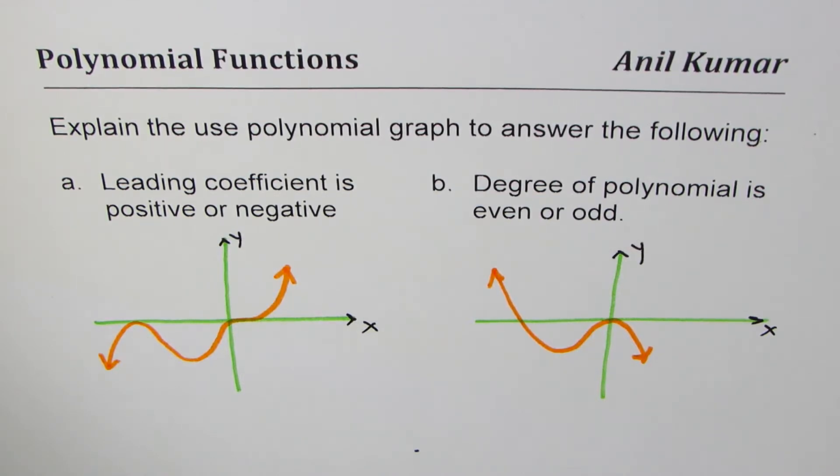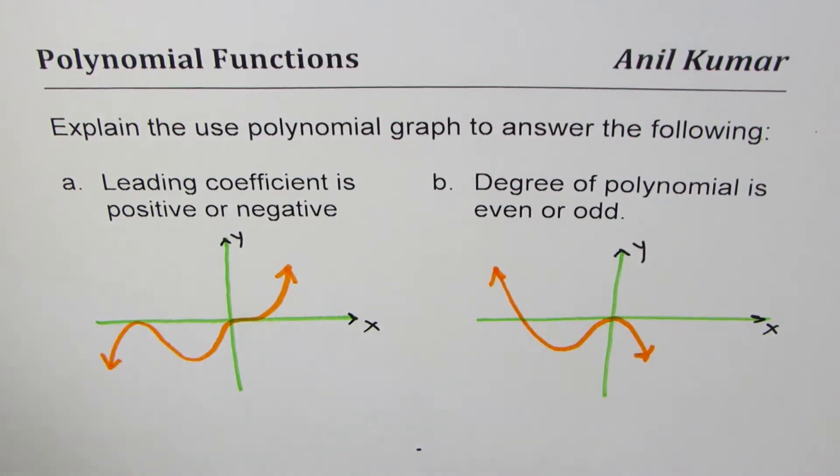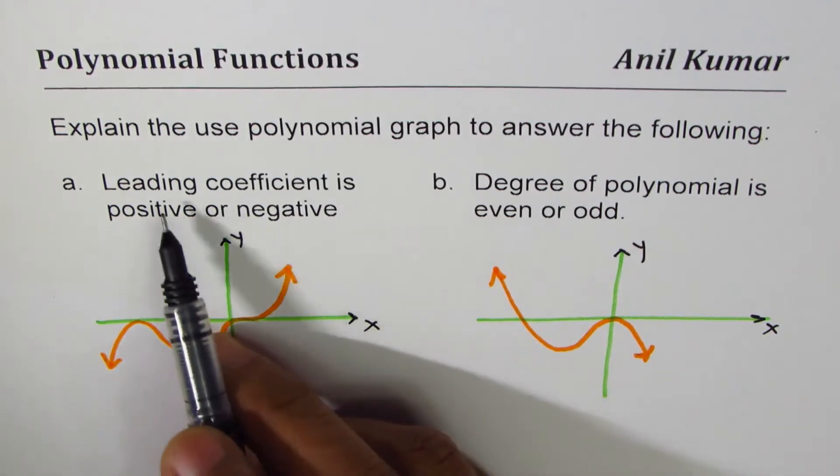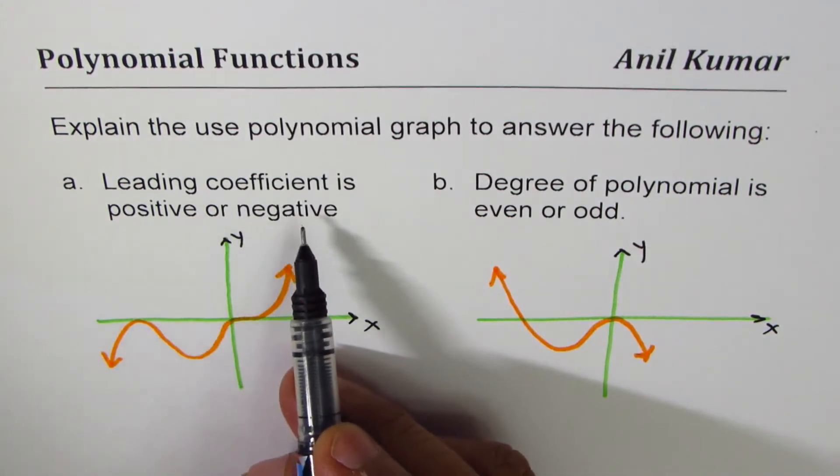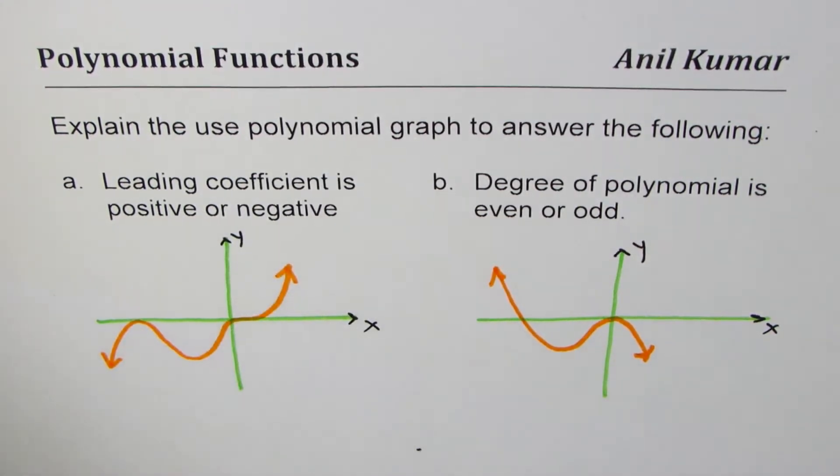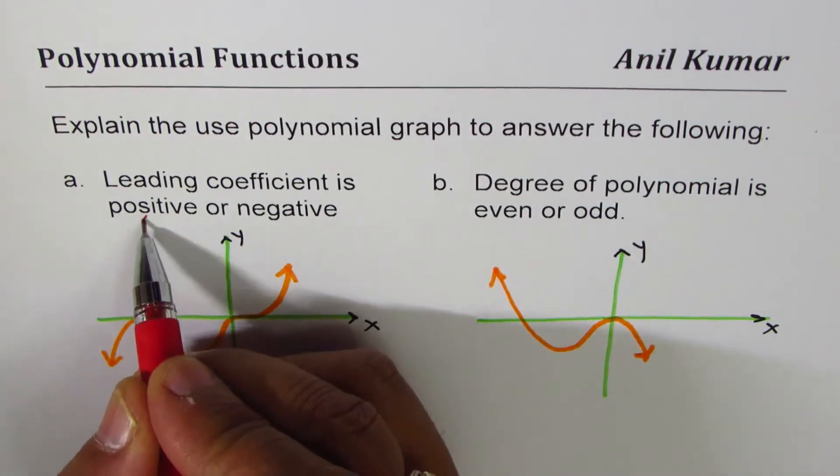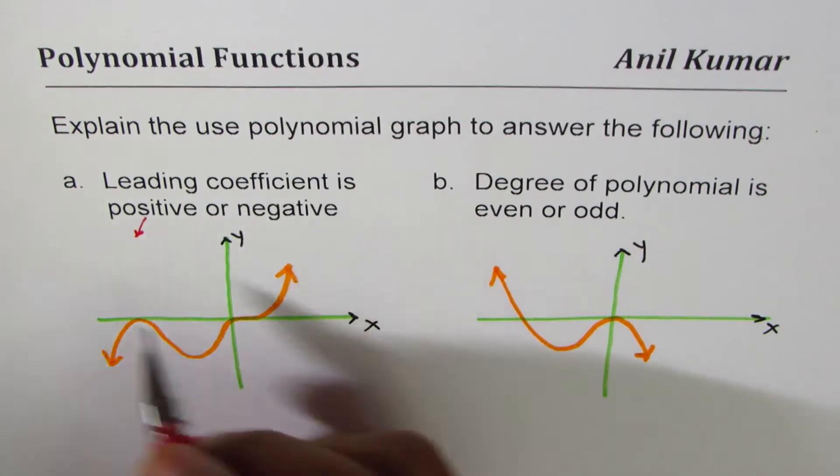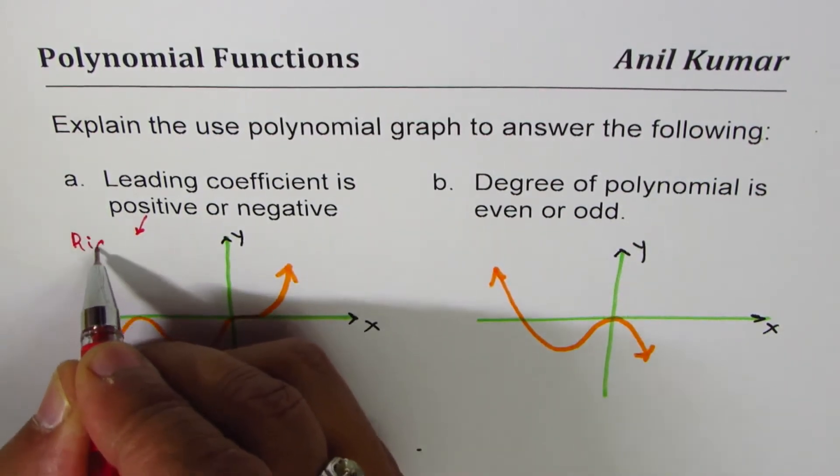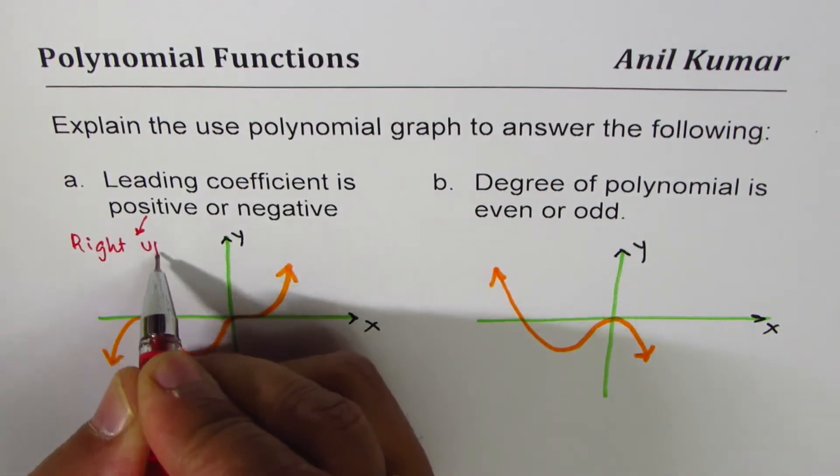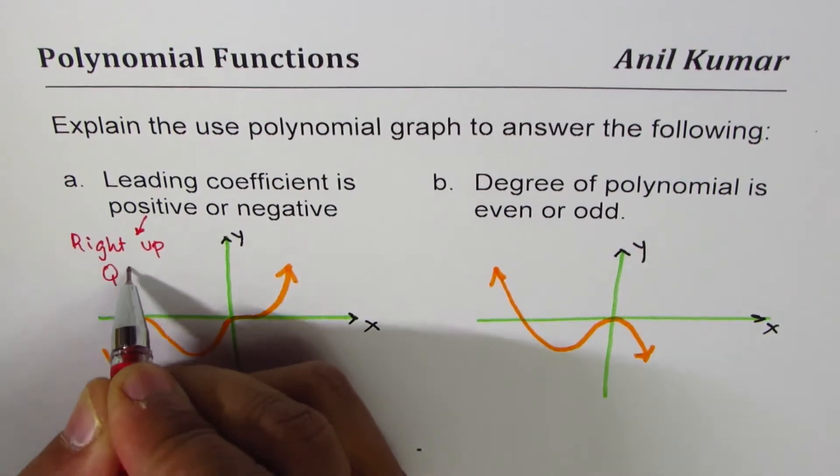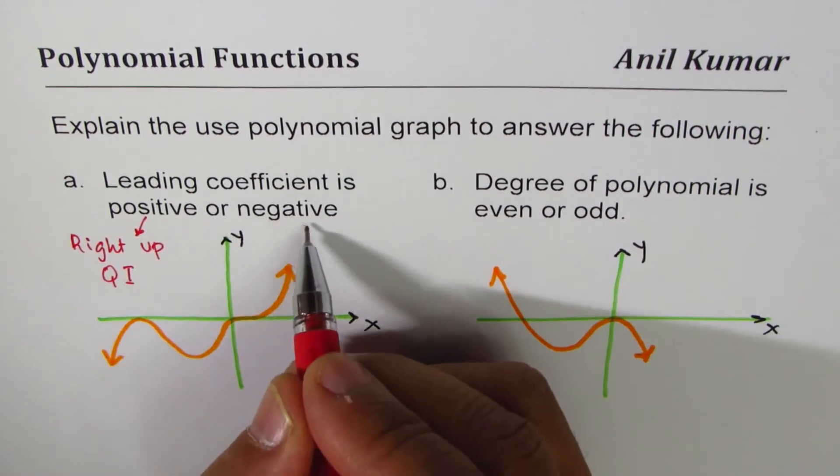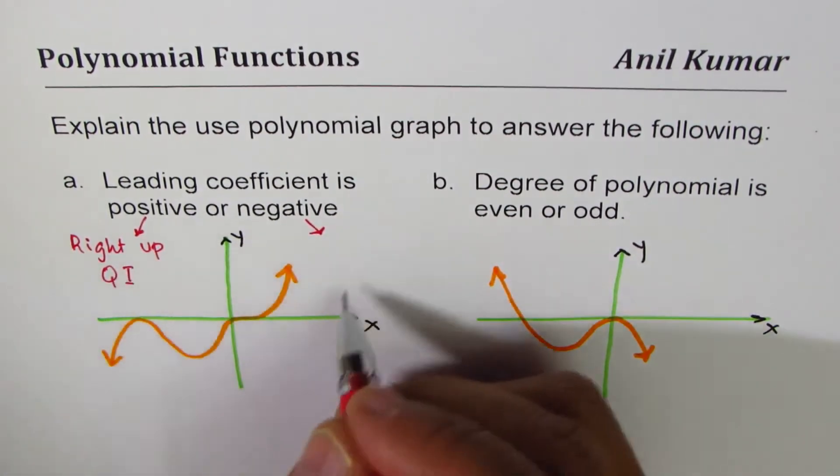We are given two graphs to analyze. Now how do you find whether the leading coefficient is positive or negative? Well, if the leading coefficient is positive, the right side of the graph is in quadrant one. We say right up, or it is in quadrant one.